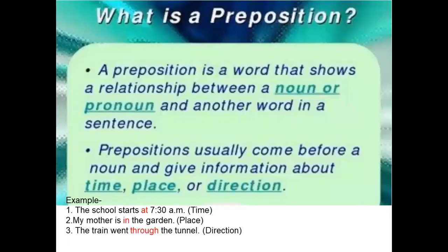Now, what is a preposition? The word 'preposition' is made up of two words: pre plus position. Pre means before and position means place. So a preposition is a word that shows a relationship between a noun or a pronoun and another word in a sentence. Prepositions usually come before a noun or a pronoun and give information about time, place, or direction.